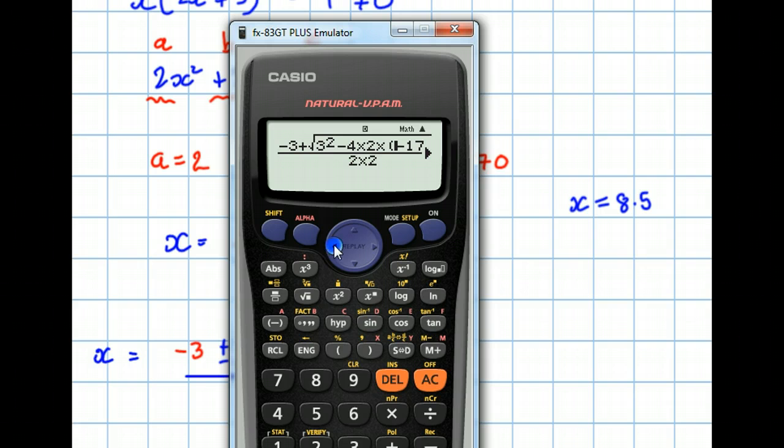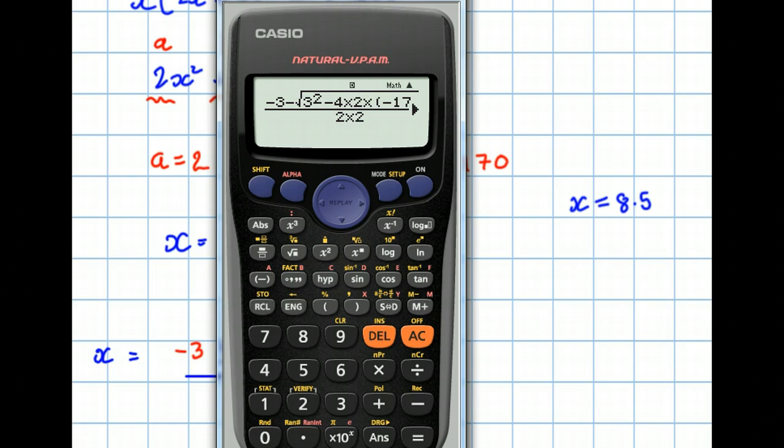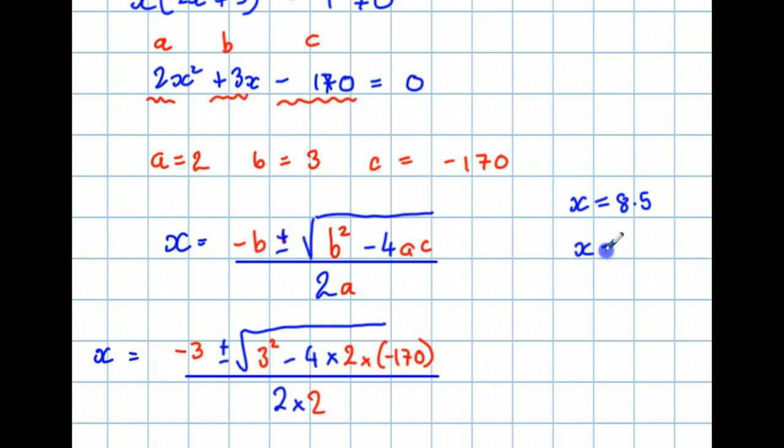I just change that plus sign to a minus and then press execute or equals and minus 10.